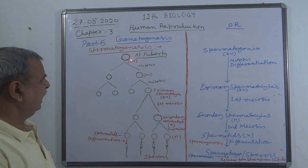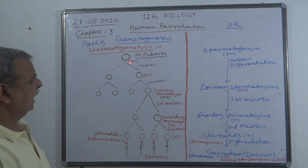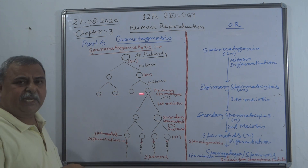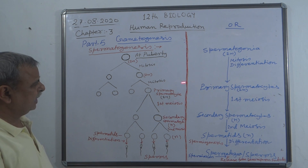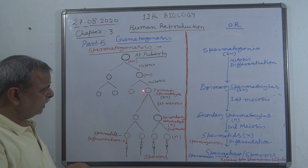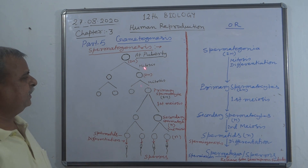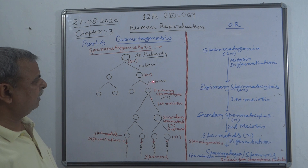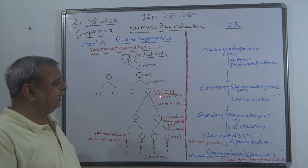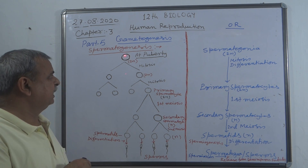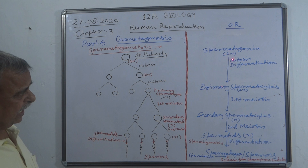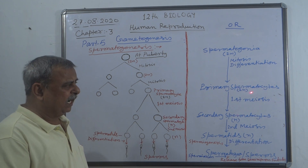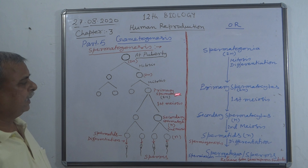Just see here — this spermatogonium undergoes mitotic division as well as differentiation to increase their number. Compare both charts. The increasing number of cells produces primary spermatocytes. Because these are formed by mitotic cell division, they have the same number of chromosomes as the parent spermatogonia — represented by 2N, the diploid number.